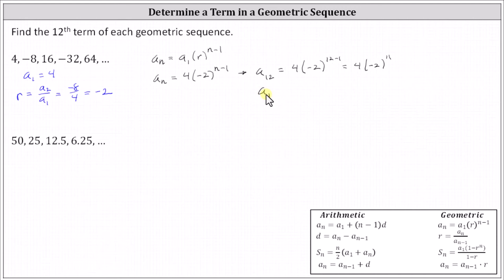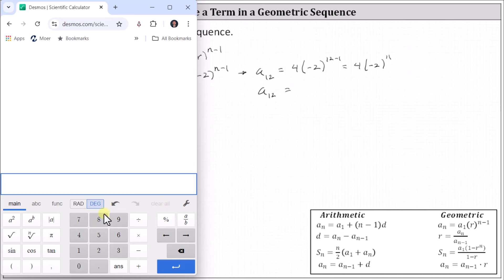Now we'll use the calculator to determine a sub 12. I'm using the Desmos Scientific Calculator. We enter four, open parenthesis, negative two, close parenthesis, raised to the power of 11. Enter. The twelfth term is negative 8,192.